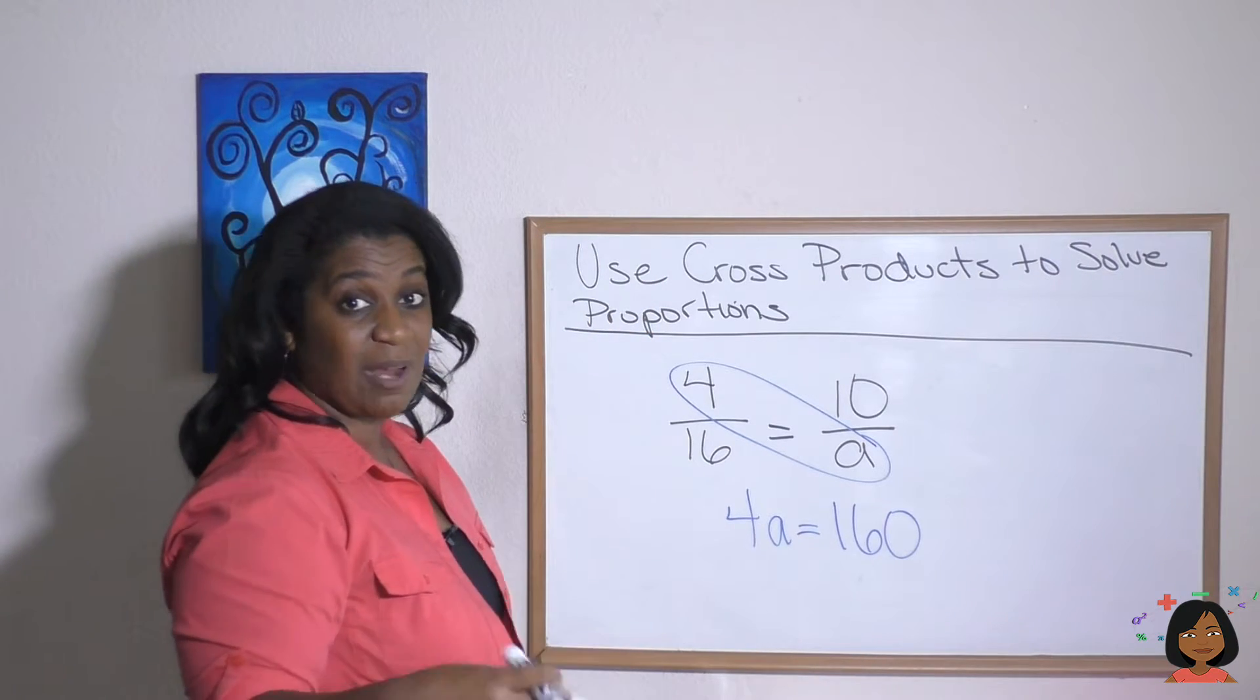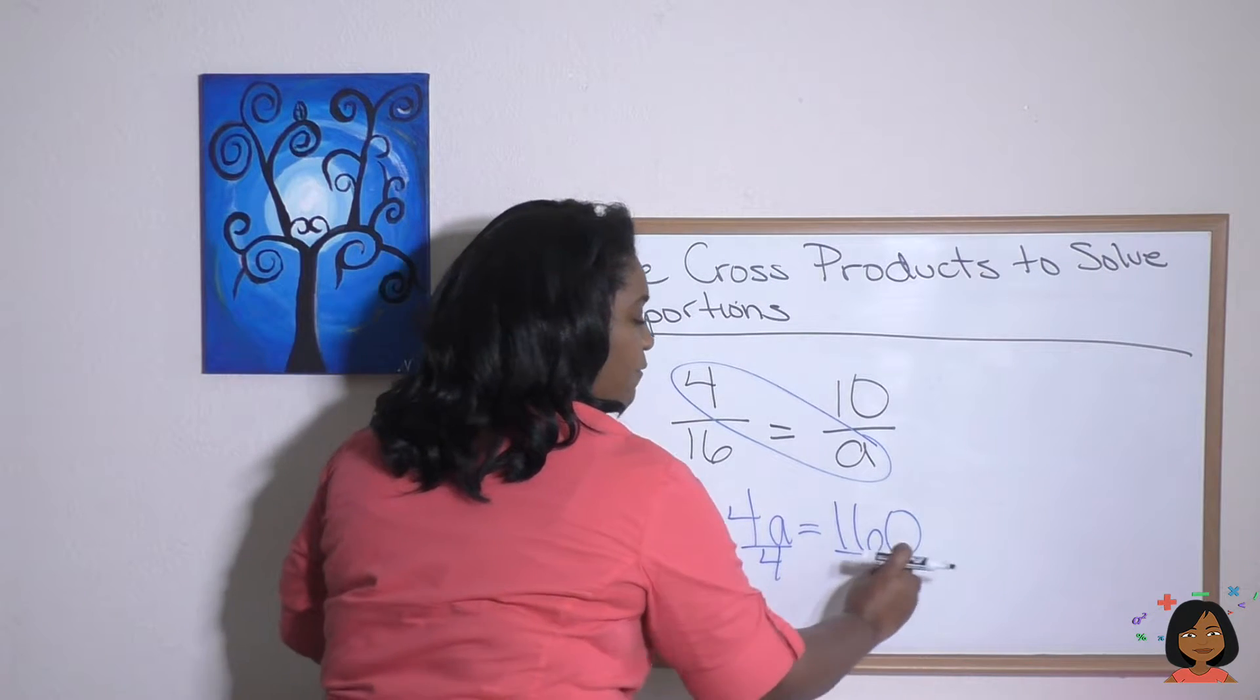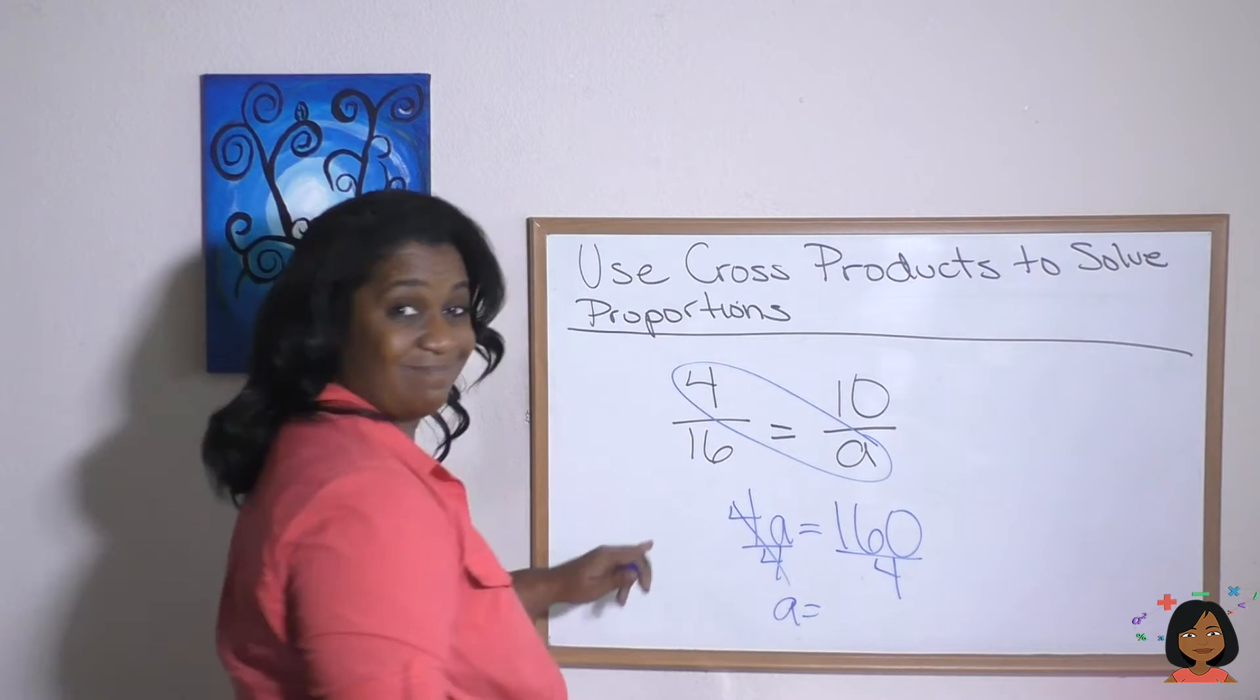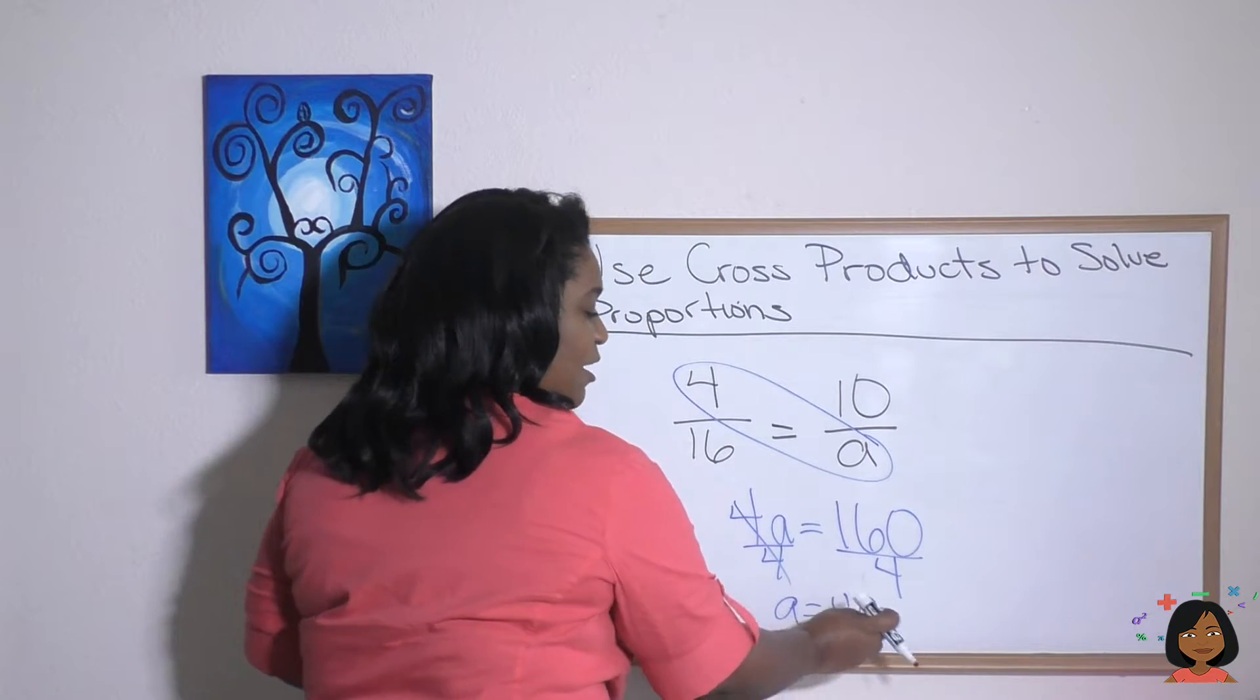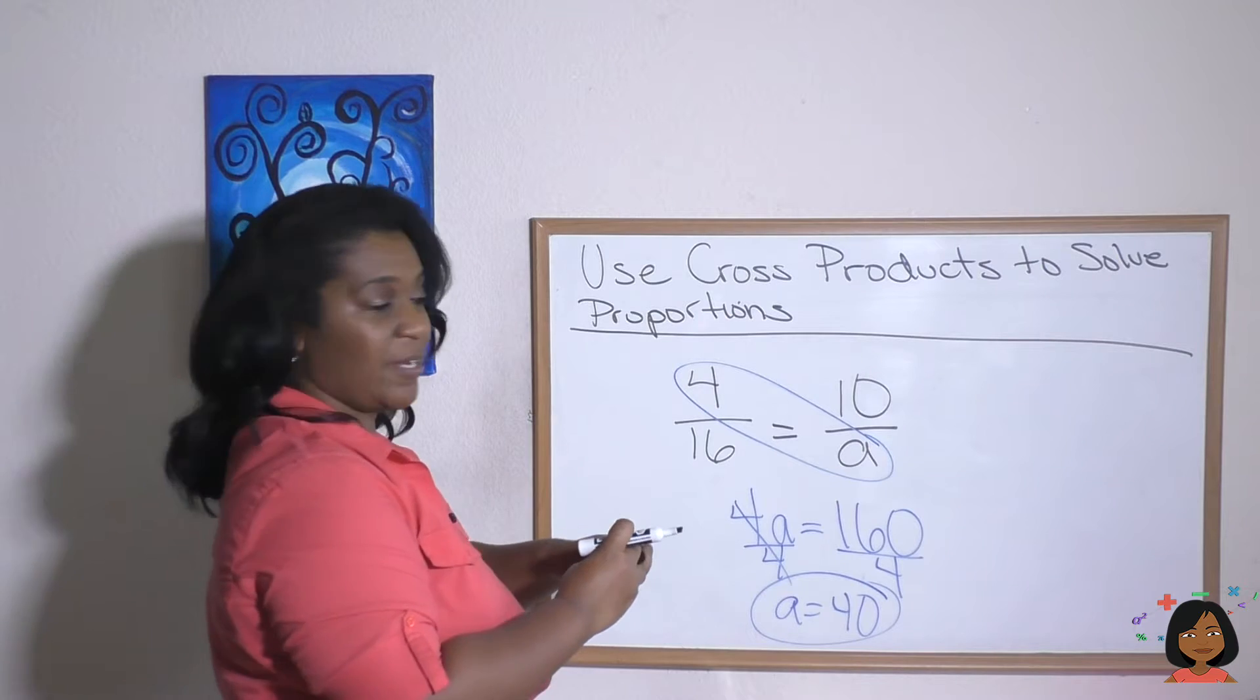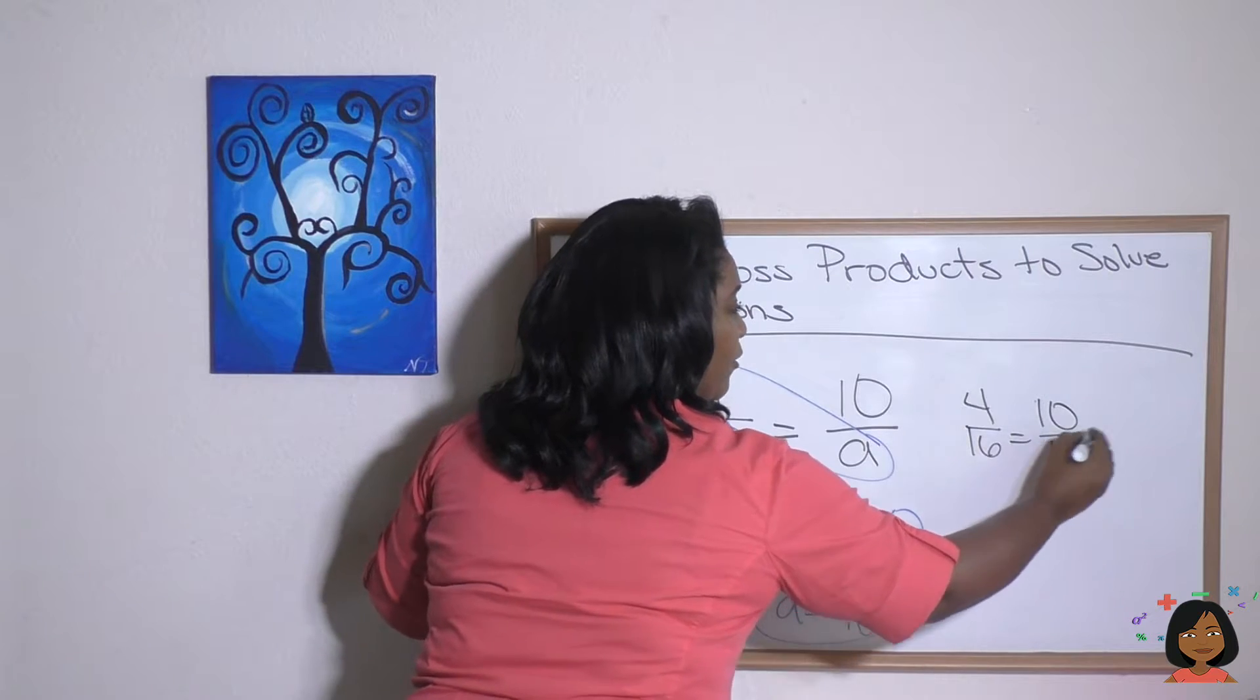This is just a missing number in multiplication. So we're going to divide to find out the answer. We're going to divide both sides by four. Well, I'm left with A on this side. And on this side, four goes into 16 four times, four goes into zero zero times. That means that A is 40. So our missing number is 40, which means 4/16 equals 10/40.